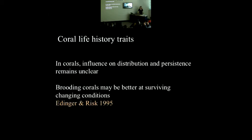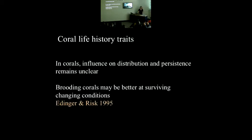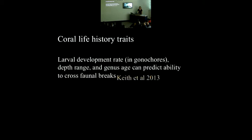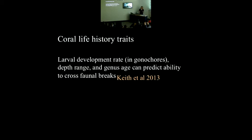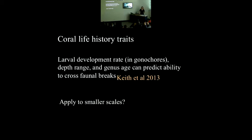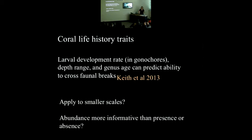In corals, the effects of life history traits on distribution and persistence remains unclear. One interesting suggestion is that brooders might be better at surviving changing conditions, based on geological records in the Caribbean where fewer brooders went extinct during the Oligocene-Miocene extinction. Keith et al. found that certain life history traits are able to predict the ability of a species to cross a faunal break or barrier. My question to add to this is: does this apply to smaller scales? Can life history traits predict the ability to cross breaks, but also to become abundant once a species crosses a break?